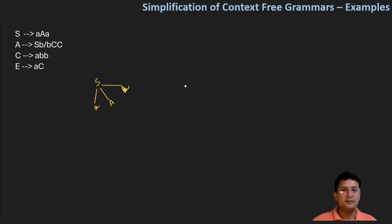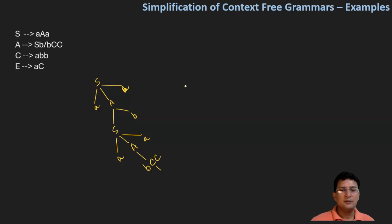S produces A, A, B, C. A produces S, B, A, and also capital A with small 'a'. This leads to B, C, C, B and B, C like this. C leads us to A, B, B and also to A, B, B. So C is leading us to a terminal symbol — that is okay. S is also leading us to a terminal symbol.